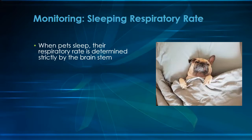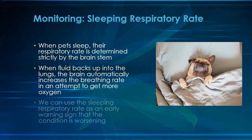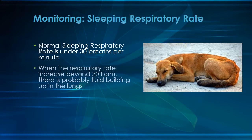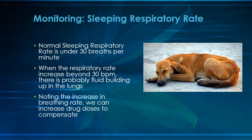We know that the rate of breathing in a sleeping dog can tell us whether the lungs are filling with fluid. When a pet is sleeping, his breathing rate is determined by the brain stem alone. If the brain is not getting enough oxygen — as happens when fluid accumulates in the lungs from increased pressure backing up from the left ventricle — the brain increases the breathing rate to compensate. A normal dog will breathe under 30 times a minute when sound asleep, with most below 20 breaths per minute. When the sleeping respiratory rate exceeds 30 breaths per minute, it is probably due to buildup of fluid in the lungs and you should let us know so we can adjust medication levels.